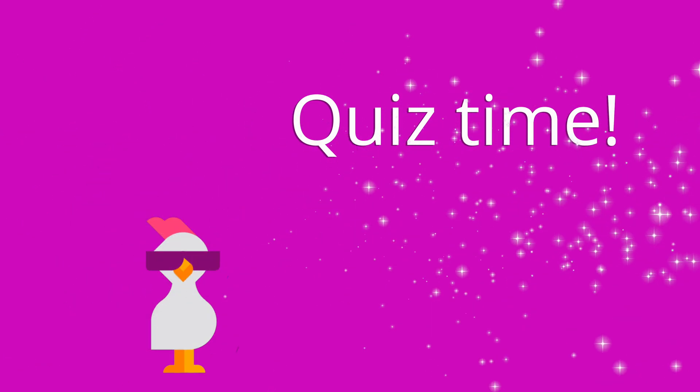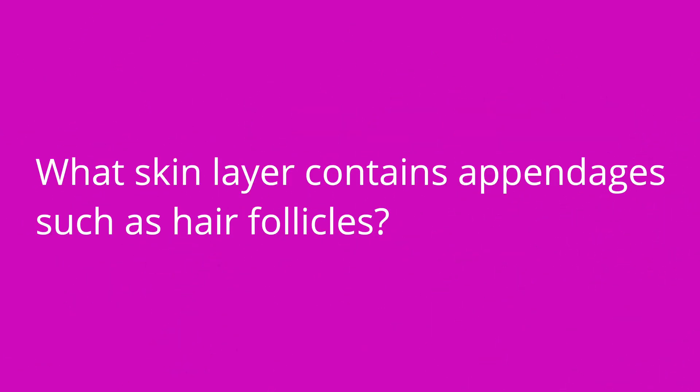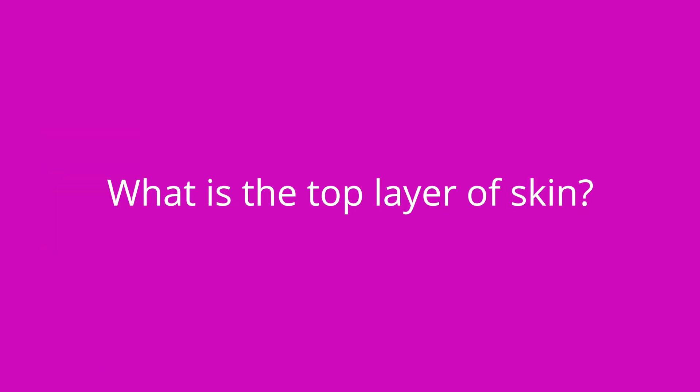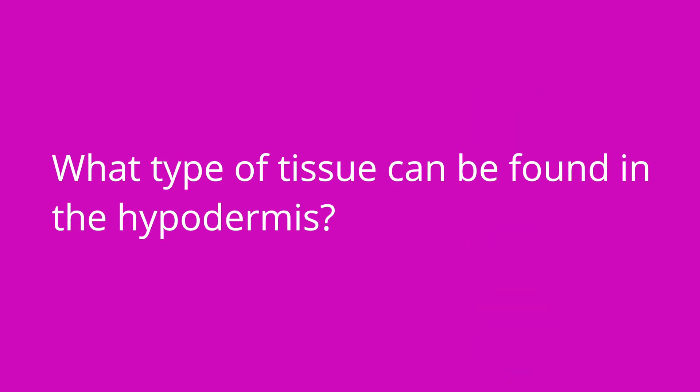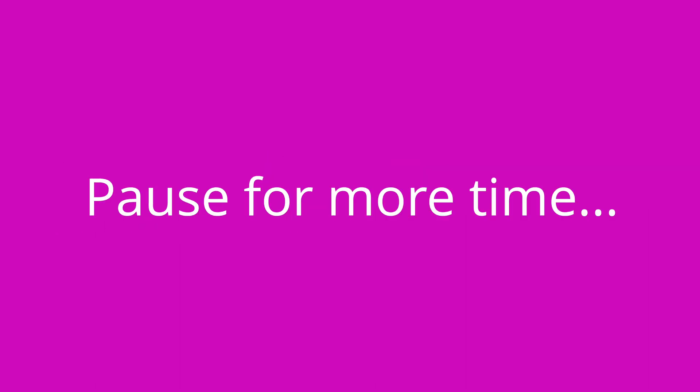It's quiz time — I've got five questions for you. Question one: What skin layer contains appendages such as hair follicles? The answer is the dermis. Question two: What is the top layer of skin? The answer is the epidermis. Question three: What type of tissue can be found in the hypodermis? The answer is adipose tissue.